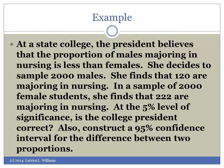Let's look at an example. At a state college, the president believes that the proportion of males majoring in nursing is less than females. She decides to sample 2,000 males. She finds that 120 are majoring in nursing.